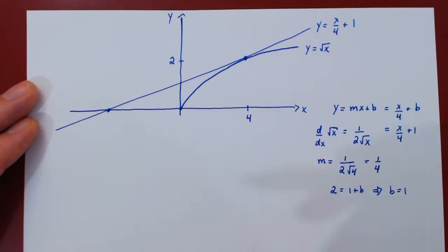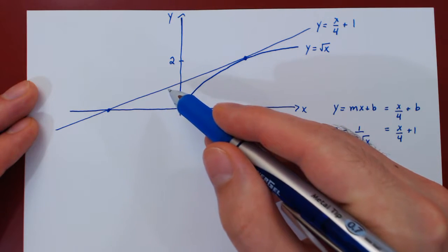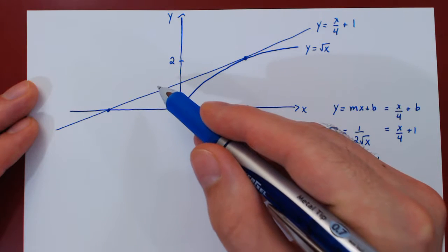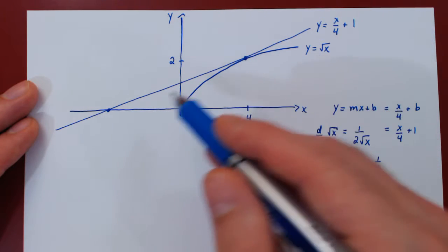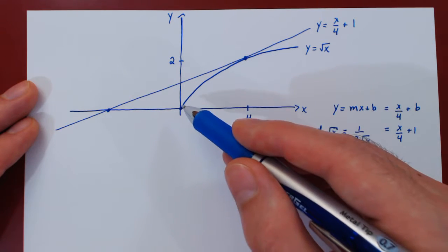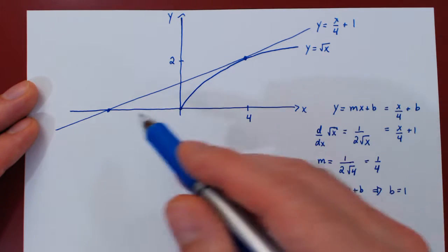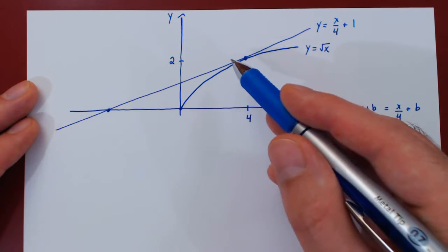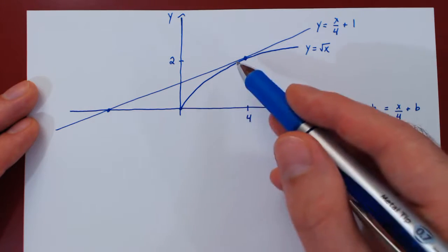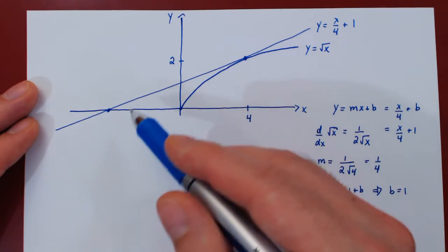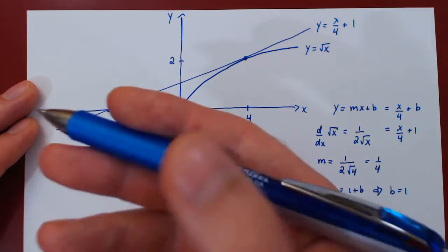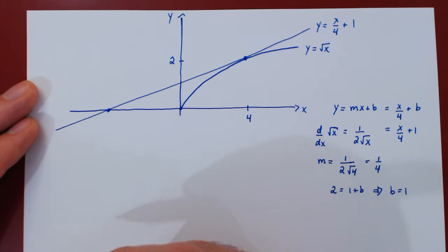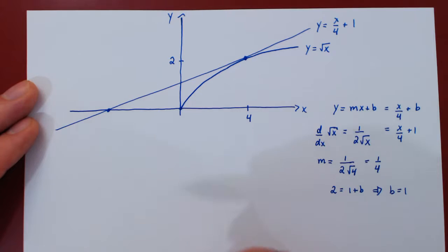With horizontal rectangles, the length is the right value minus the left value. The right curve is always the square root function, and the left curve is always the tangent line — they never change across the entire region. This yields a single set of rectangles, therefore a single definite integral. So the better solution is to go with horizontal rectangles.